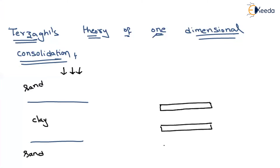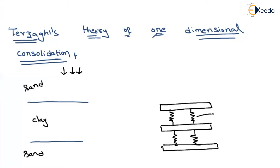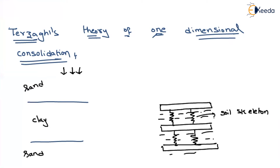In this model, pistons are attached by springs. Effective stress is applied here. The spring skeleton — whatever the springs — represents the soil skeleton. These springs are nothing but the soil skeleton, and they are surrounded by water, representing the saturated soil sample. All these springs are surrounded by water.